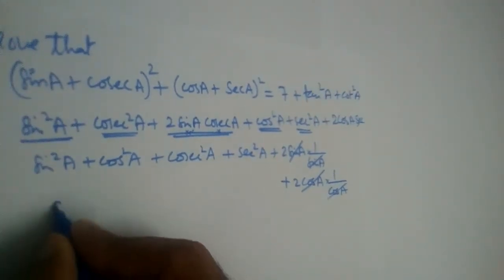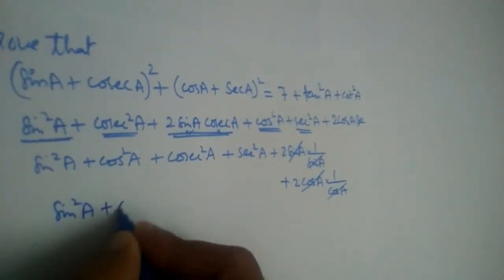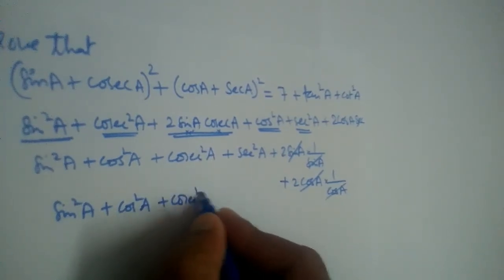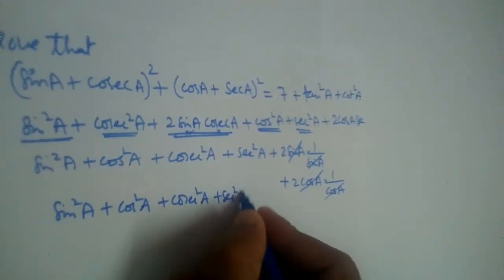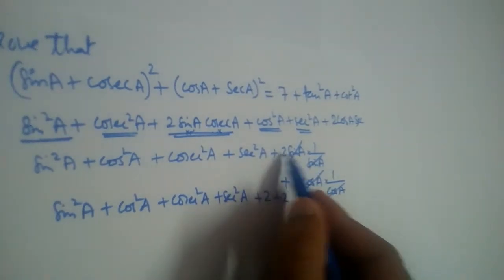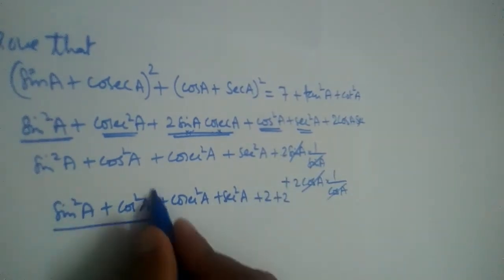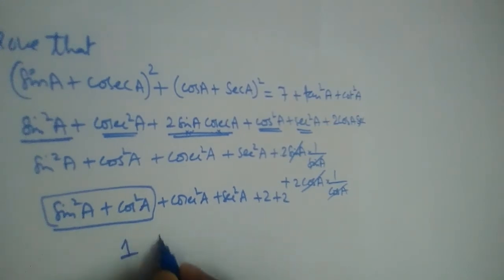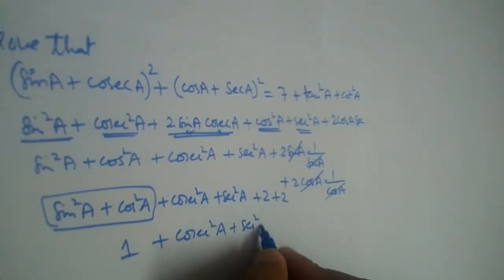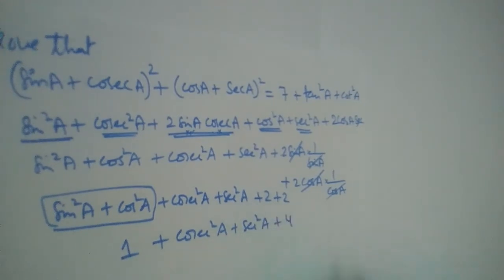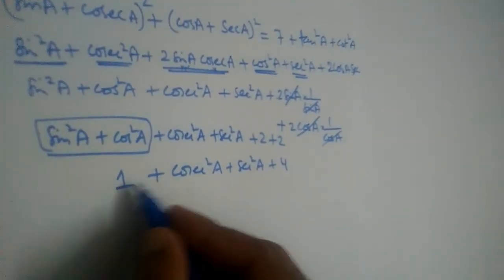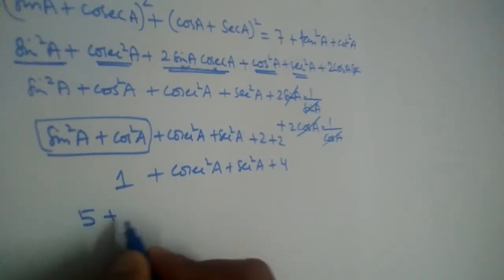So now we have sin²a + cos²a + cosec²a + sec²a + 2 + 2. We know sin²a + cos²a = 1, so this becomes 1 + cosec²a + sec²a + 4, which equals 5 + cosec²a + sec²a.